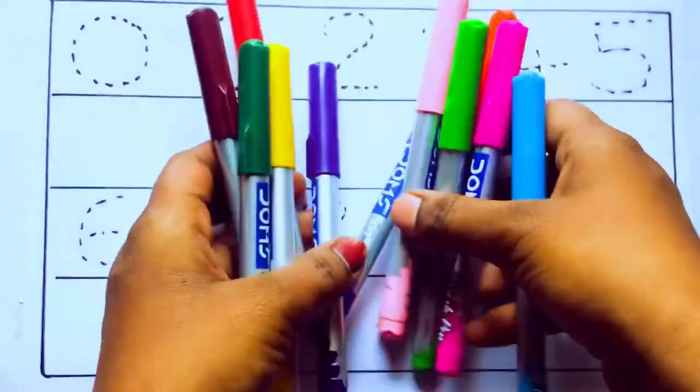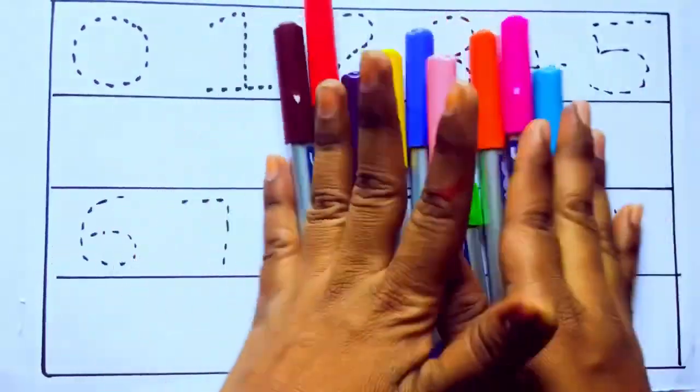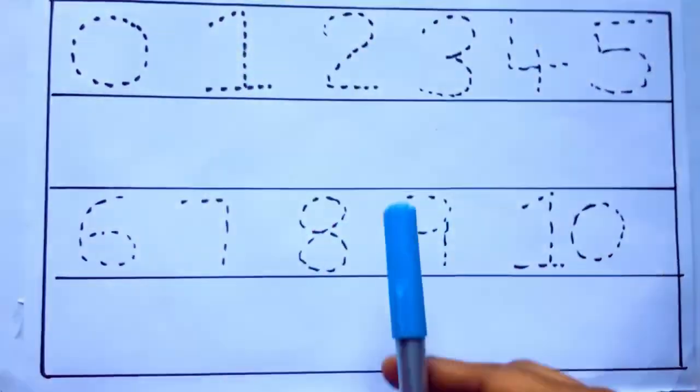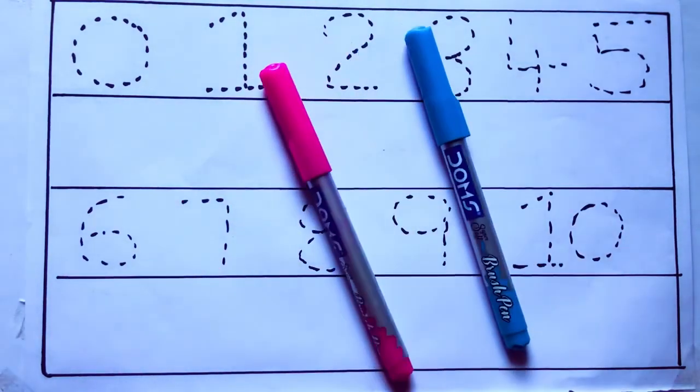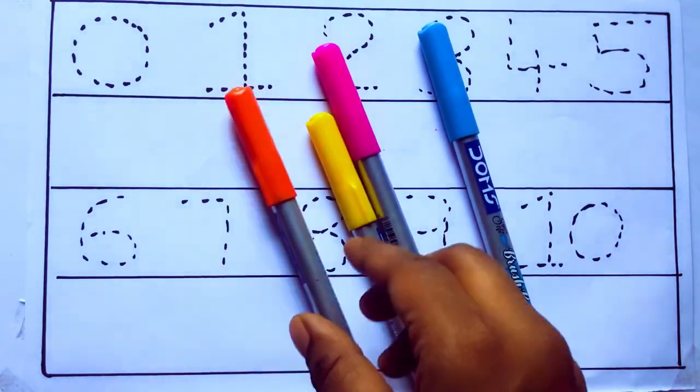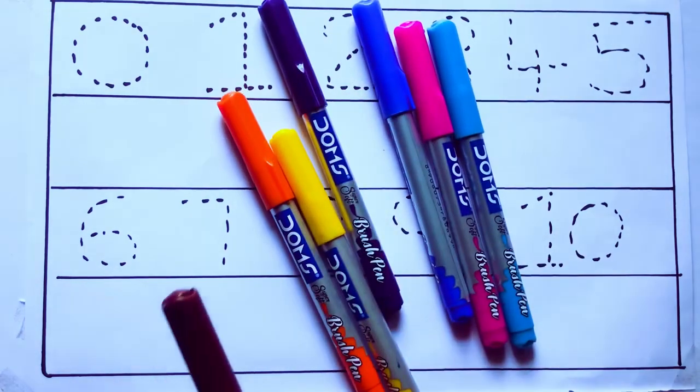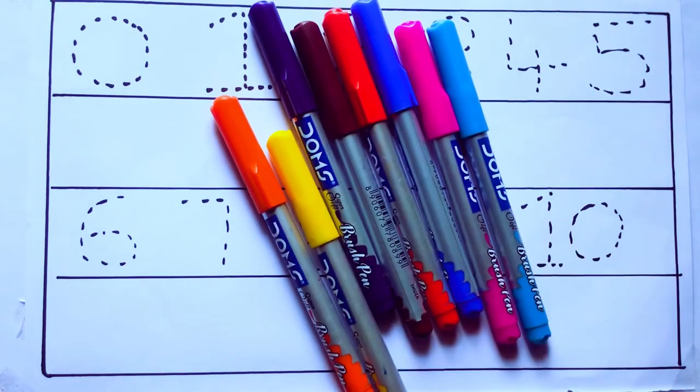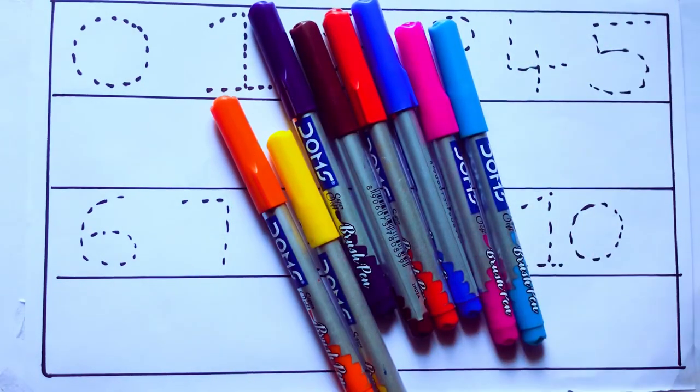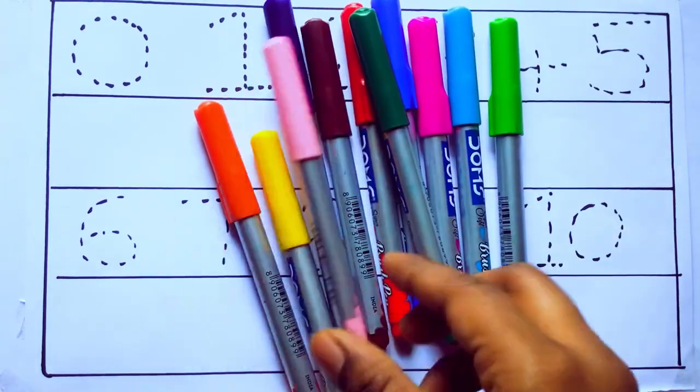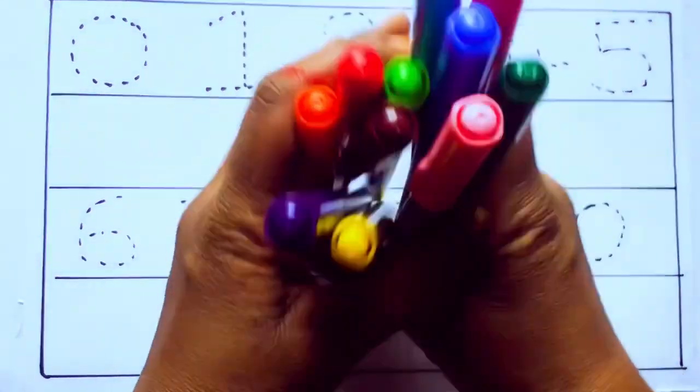Let's learn some colors. These are all the color pencils. Let's learn the names: sky blue color, pink color, yellow color, orange color, violet color, blue color, brown color, red color, green color, and pink color.